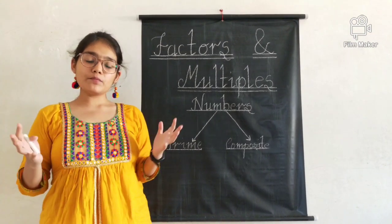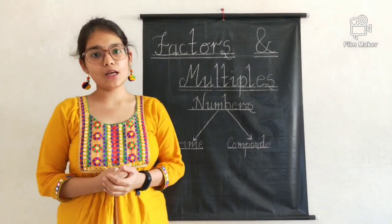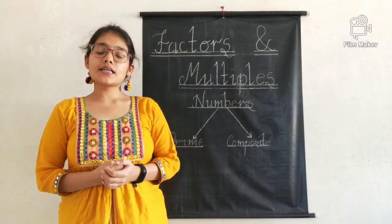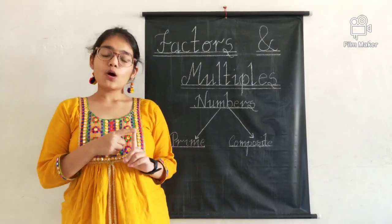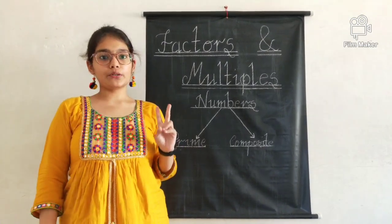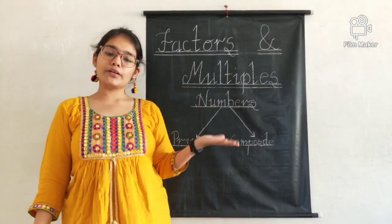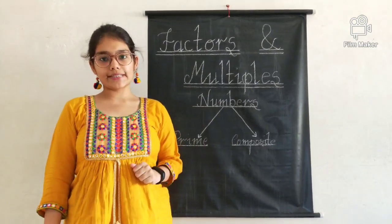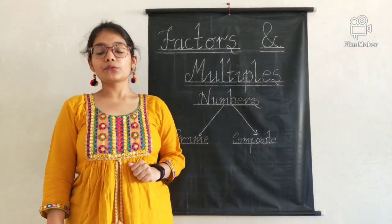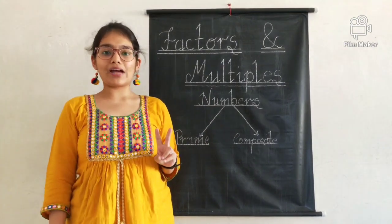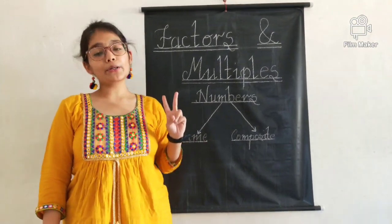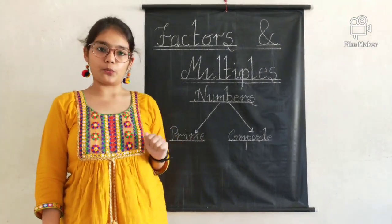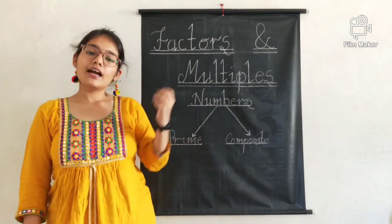In this way, we can classify numbers into two types: one, prime numbers, and two, composite numbers. Let's try to understand what prime numbers are. Prime numbers are those numbers which have only 2 factors.